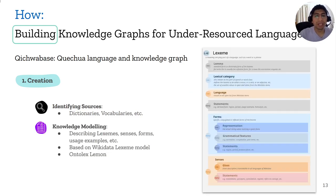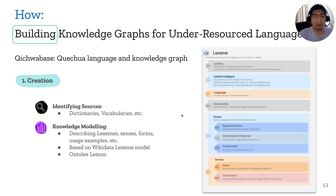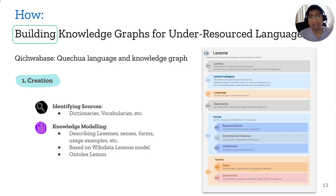We then modeled this information using the Ontolex-Lemon ontology and the Wikidata ontology for lexicographical data, where we define and describe lexemes. We state the lemma, which category it belongs to, and which language we are talking about. If it's a variant, we can add more variants and dialects of the language. It also allows describing forms and senses.